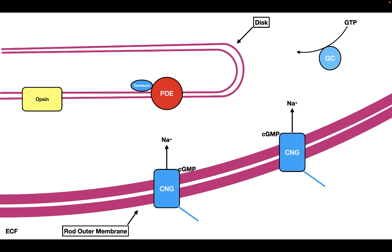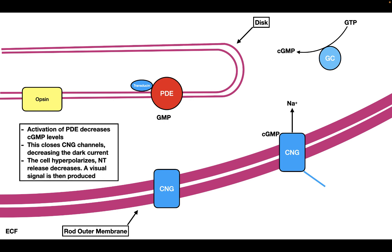So what happens when light comes into the rod cell? When light comes into the rod cell, you have this transducin protein activated. Transducin activates phosphodiesterase. Phosphodiesterase will convert cyclic GMP into GMP, and therefore it will cause the cyclic GMP levels to decrease inside the rod cell. When cyclic GMP levels decrease, this causes some of the CNG channels to close, and when they close, sodium stops entering into the cell. So when phosphodiesterase is activated, it decreases cyclic GMP levels, closes some of the CNG channels, and decreases the dark current. When you decrease the dark current, this causes the cell to hyperpolarize and neurotransmitter release decreases.